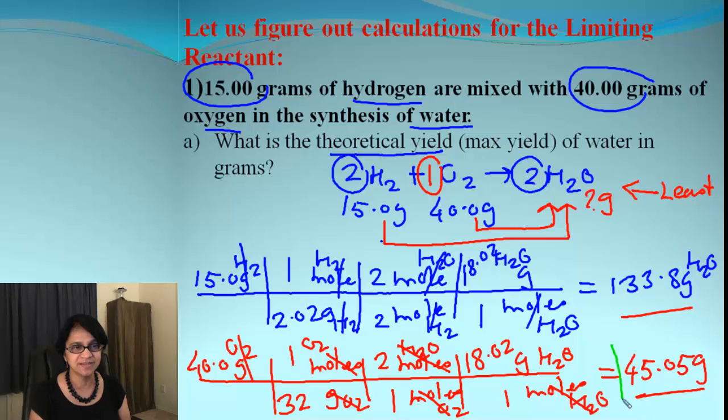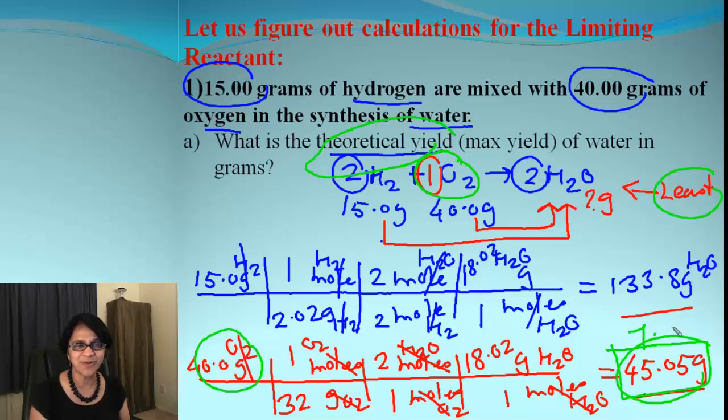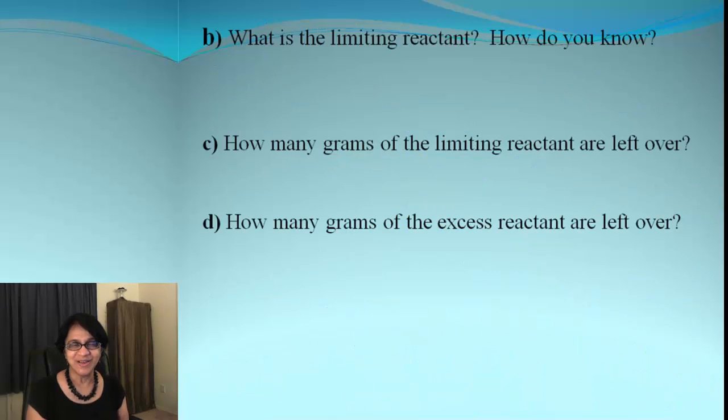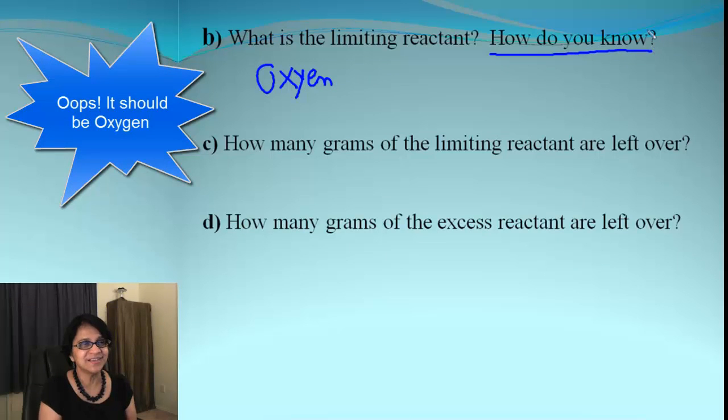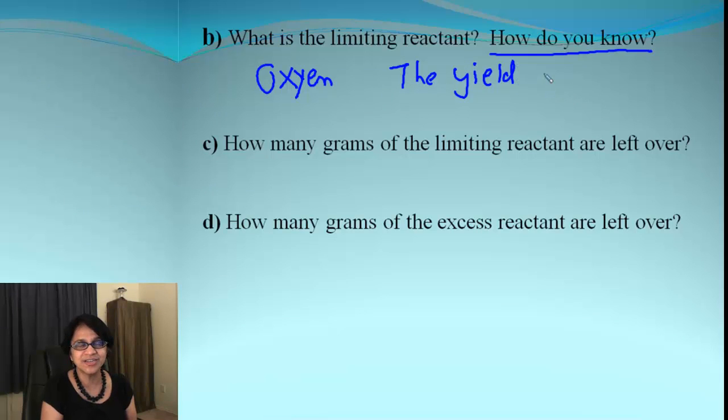Look at both answers. Out of these two answers, obviously you can tell this answer, 45.05, is the smallest, the least answer. What does that make? That makes the beginning point which we had, oxygen, that is our limiting reactant, not only that, it also tells you the theoretical yield is 45.05 grams. So that's our theoretical yield. Let's answer the questions. We have to find out what is the limiting reactant. Well, we found out that was oxygen. How do you know that? The yield from oxygen was the smallest.